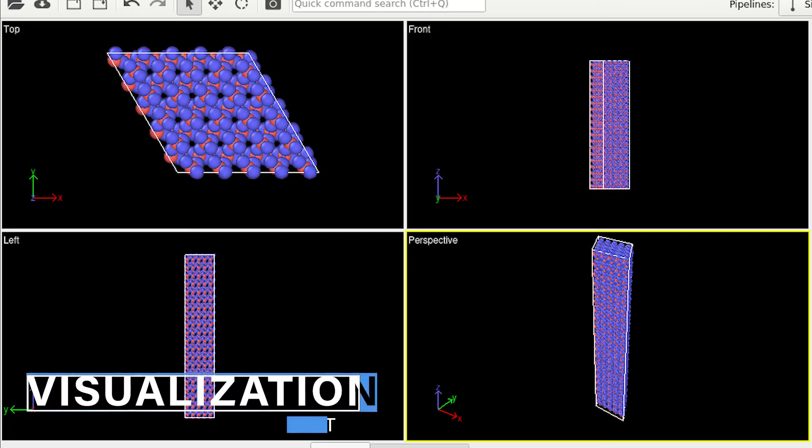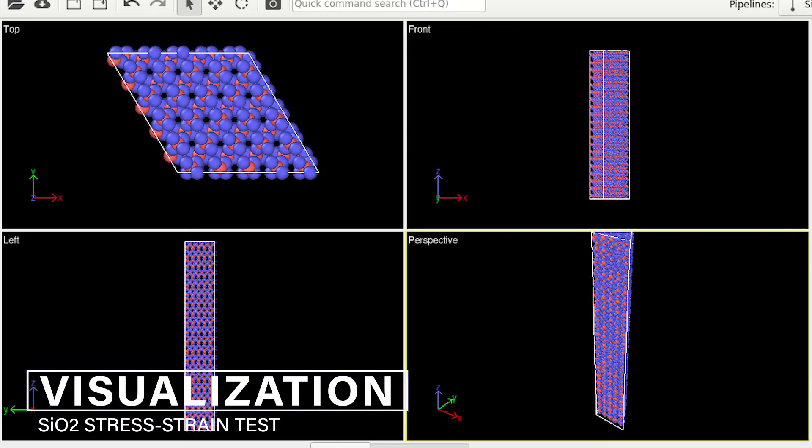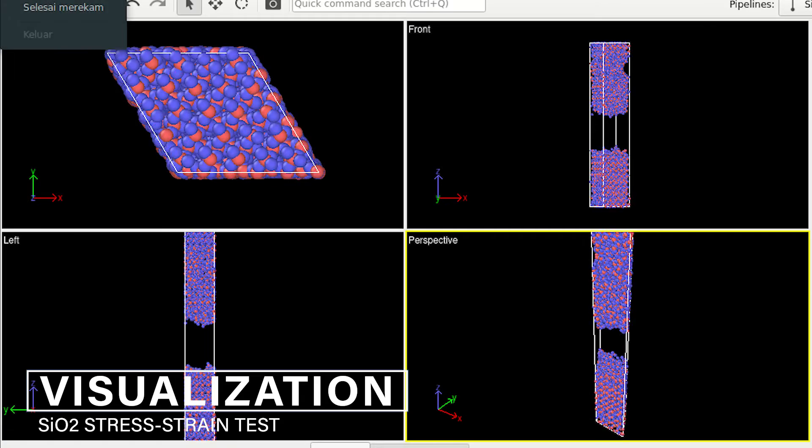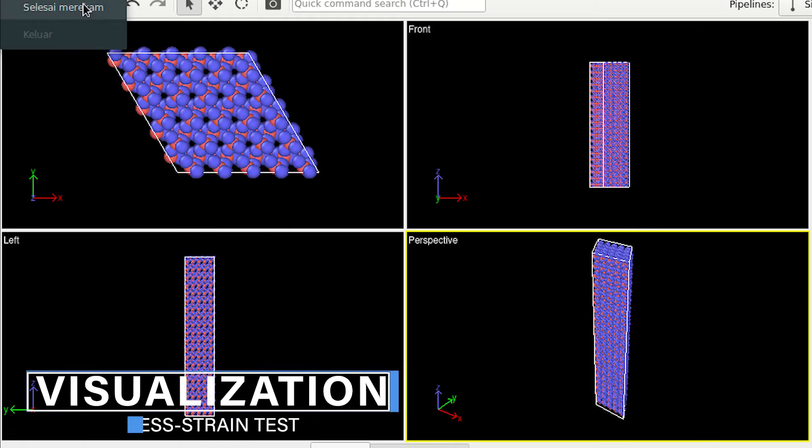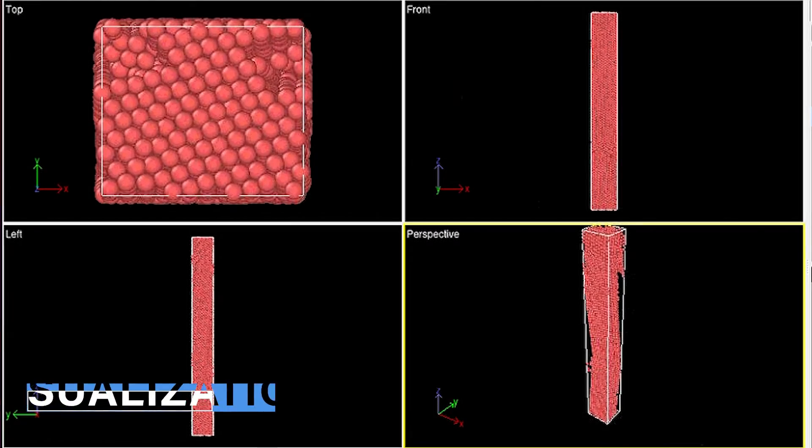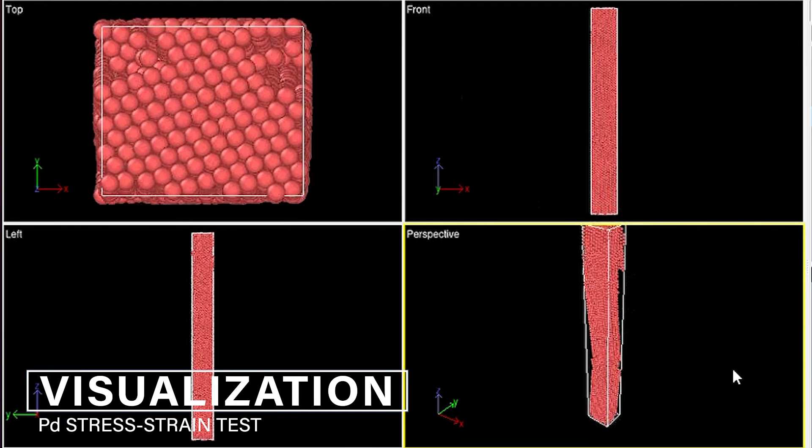Some of our projects include visualization of metallic and non-metallic nanostrength and visualization of stress-strain tests from molecules like nickel, palladium, and platina.